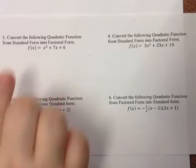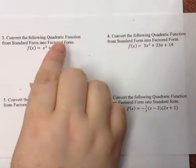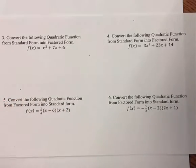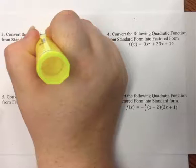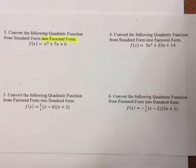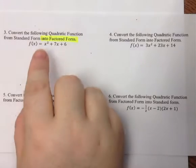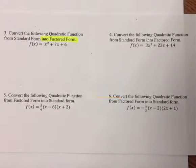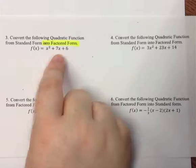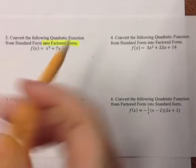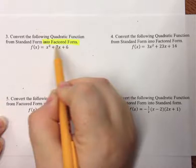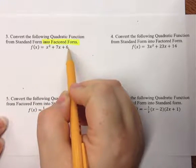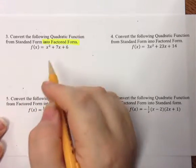To convert the following quadratic from standard form into factored form means that we want to factor it. In order to factor this, we see that we have three terms, so we're going to use MACAB. We always find our GCF first. Our GCF for this function is 1 since the smallest number is 1 and there's no x on the constant term, so we go straight into factoring MACAB.